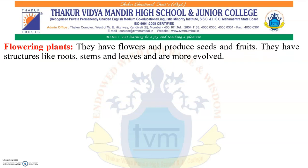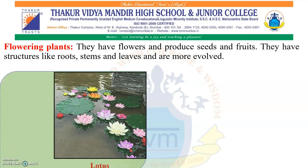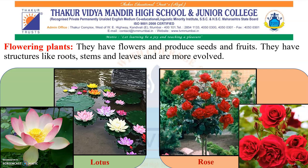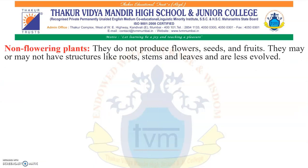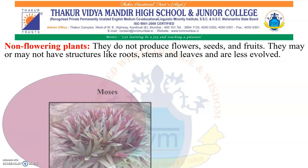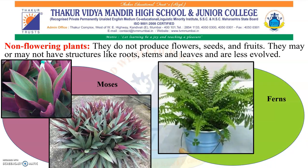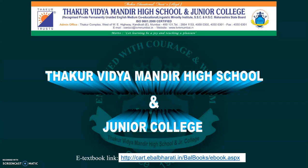Flowering plants have flowers and produce seeds and fruits. They have structures like roots, stem, and leaves, and they are more evolved. Examples include lotus and rose. Non-flowering plants — examples include ferns.